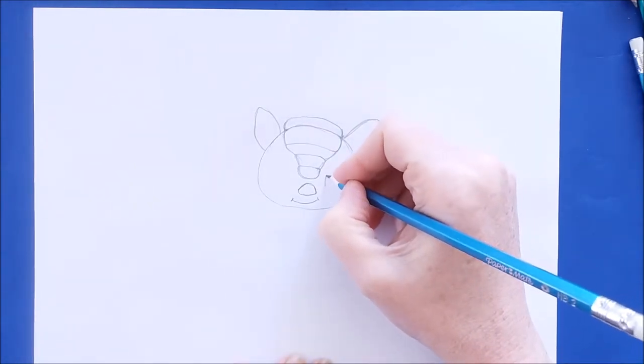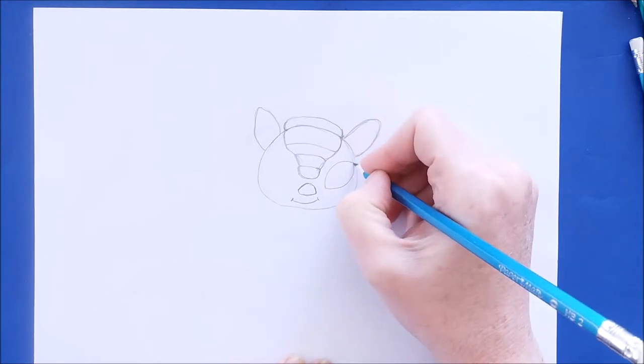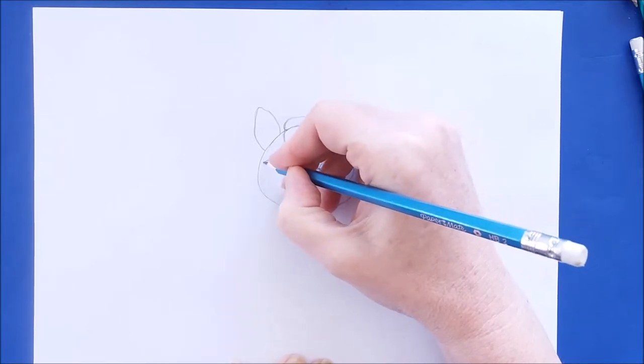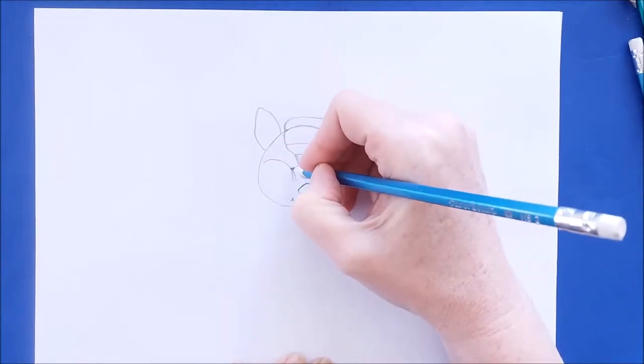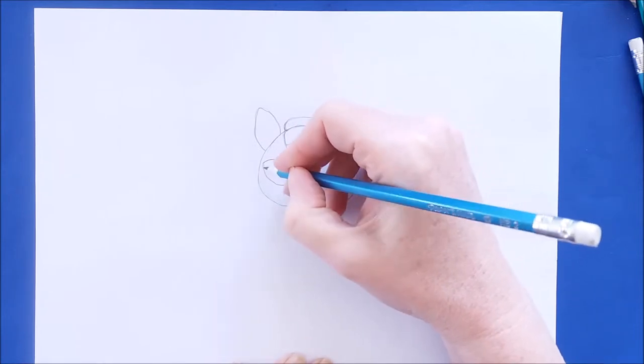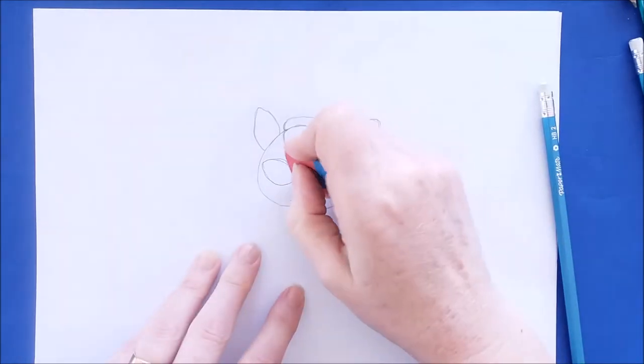Now the eyes for this armadillo are large and almond-shaped. And I'm just doing that by drawing two curving lines that come to a point at each end, and I'm connecting those lines. So here we have the two eyes of the armadillo.